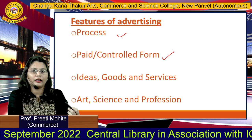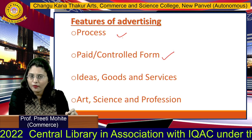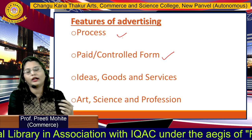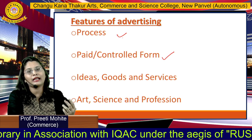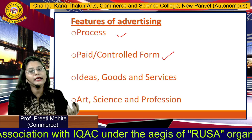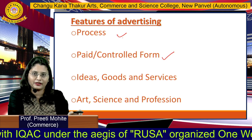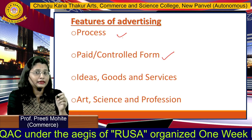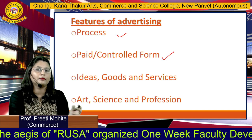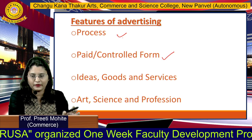Next is paid and controlled form. Advertising is a paid form, meaning the advertiser has to pay to the media for booking time and space. This feature differentiates advertising from publicity, because publicity is a non-paid form.